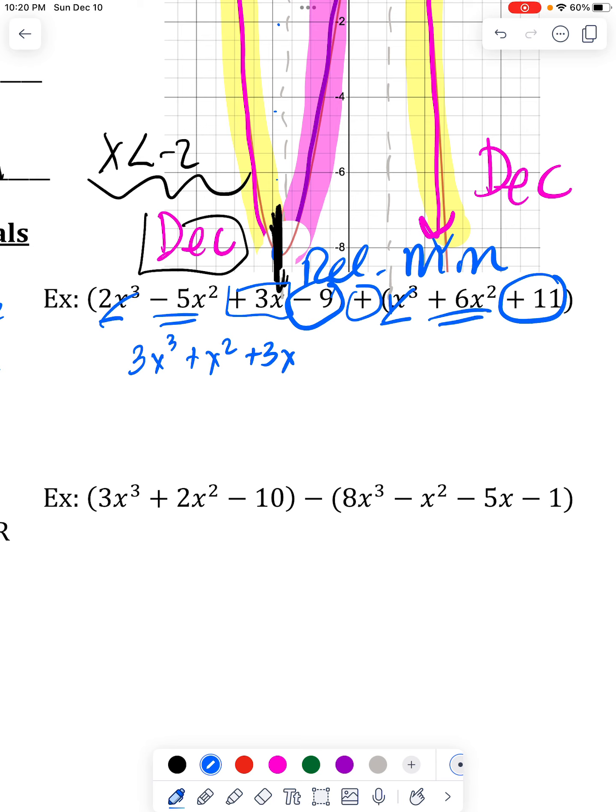And then the last thing it looks to have is the constants or the regular numbers. And -9 plus 11, just like it always has been, will turn out to be a 2. So when you're done,